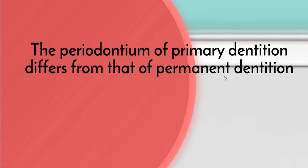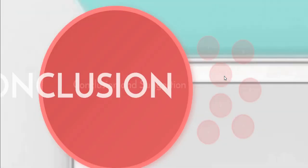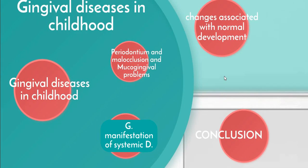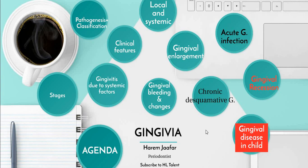The periodontium of primary dentition differs from that of permanent dentition, and you should be aware of that. This concludes our lecture regarding gingival disease in childhood. I hope you benefit from it. In the next lecture, we may discuss gingival recession or desquamative gingivitis. Thank you.